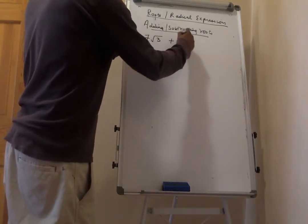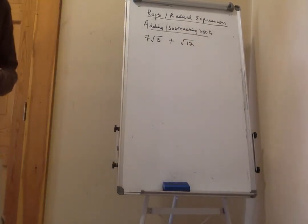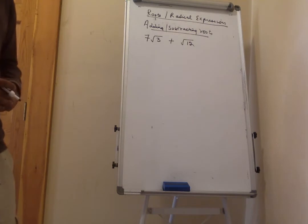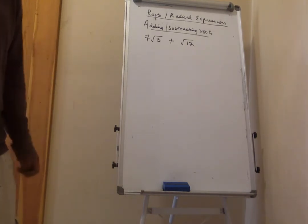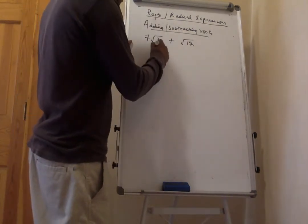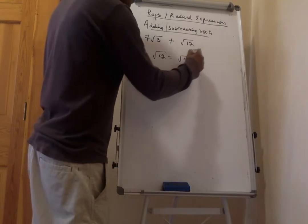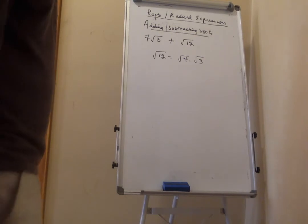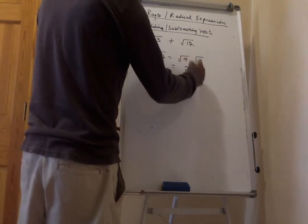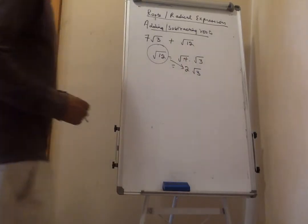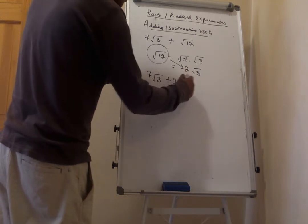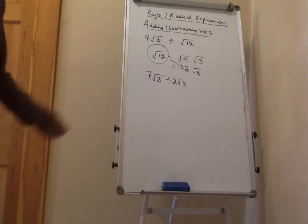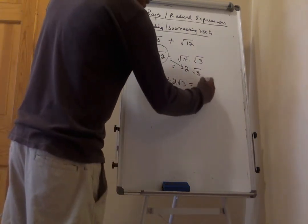Let's add 7 times the square root of 3 plus the square root of 12. The roots are different, so simplify the square root of 12: it equals the square root of 4 times the square root of 3, and the square root of 4 is 2, so the square root of 12 equals 2 times the square root of 3. Now plug it in: 7 times the square root of 3 plus 2 times the square root of 3. Add the coefficients: 7 plus 2 equals 9 times the square root of 3.